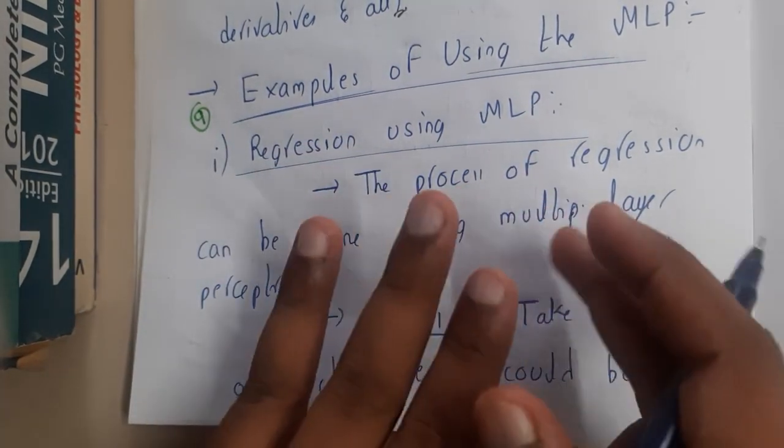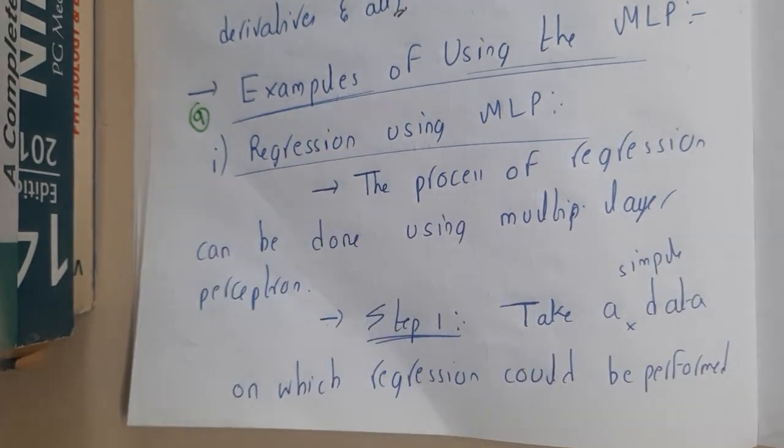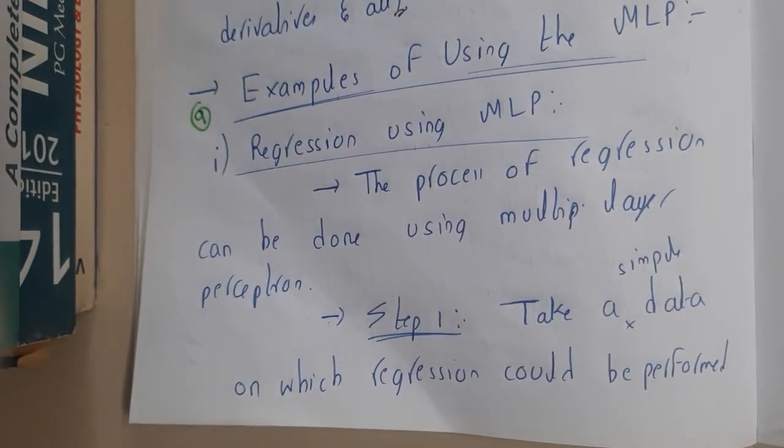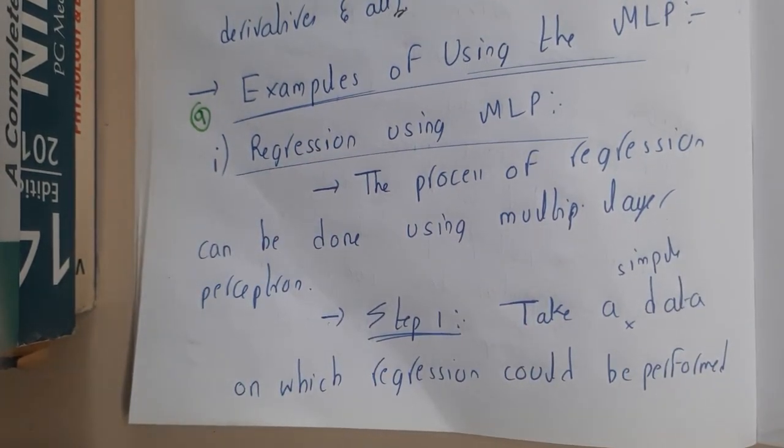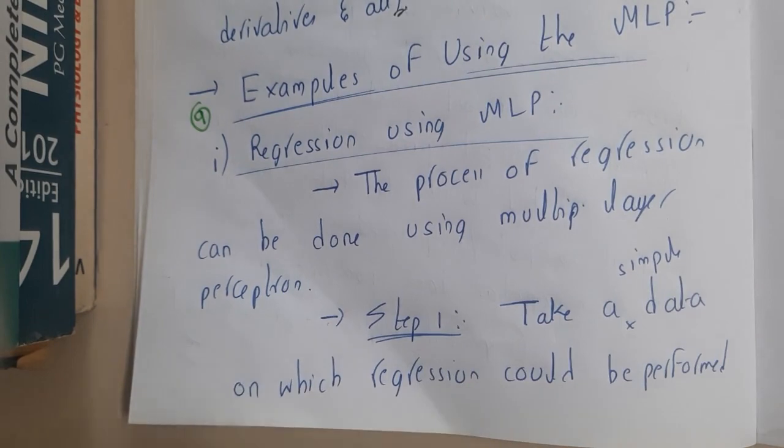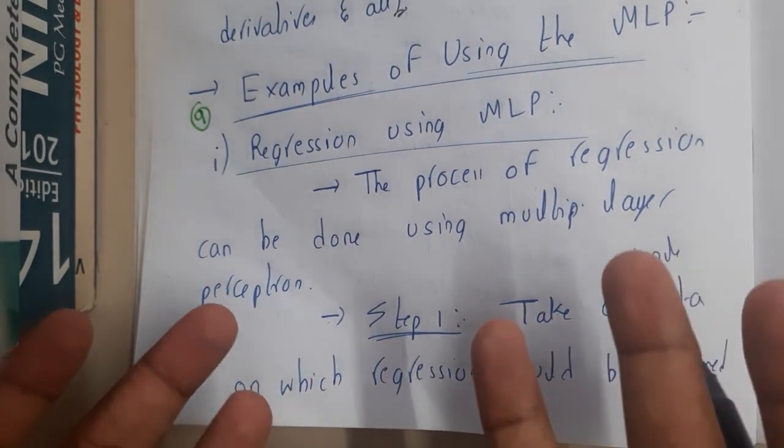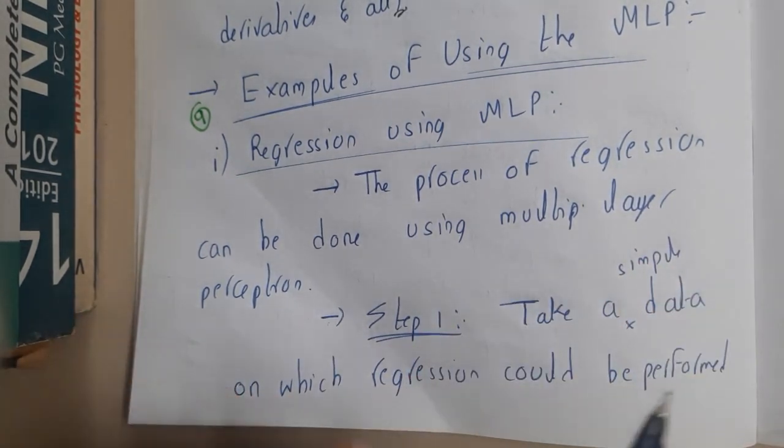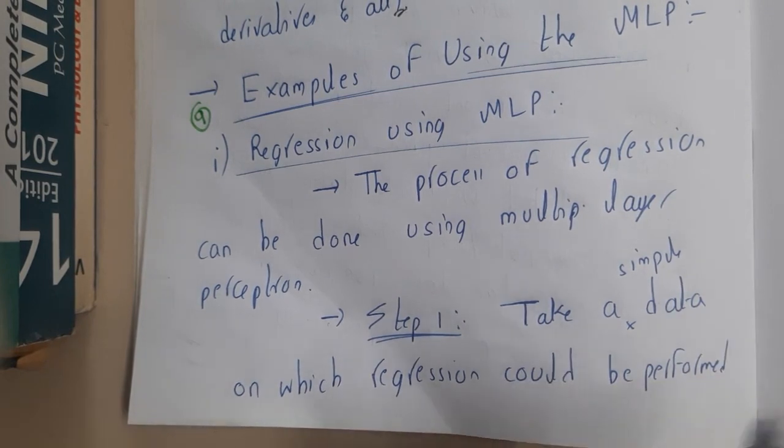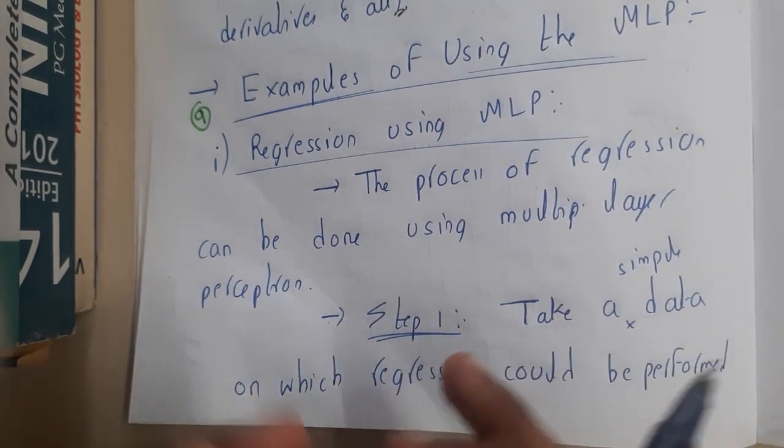Basically I don't know exactly whether we need to learn the coding of these concepts or just the theoretical step-by-step process, because if you try to write the step-by-step process for each one, it will be the same. There is no change in it. So I don't know exactly whether to write code for these particular topics or not, so I need some clarity. If you know, you can comment down below or let me know.